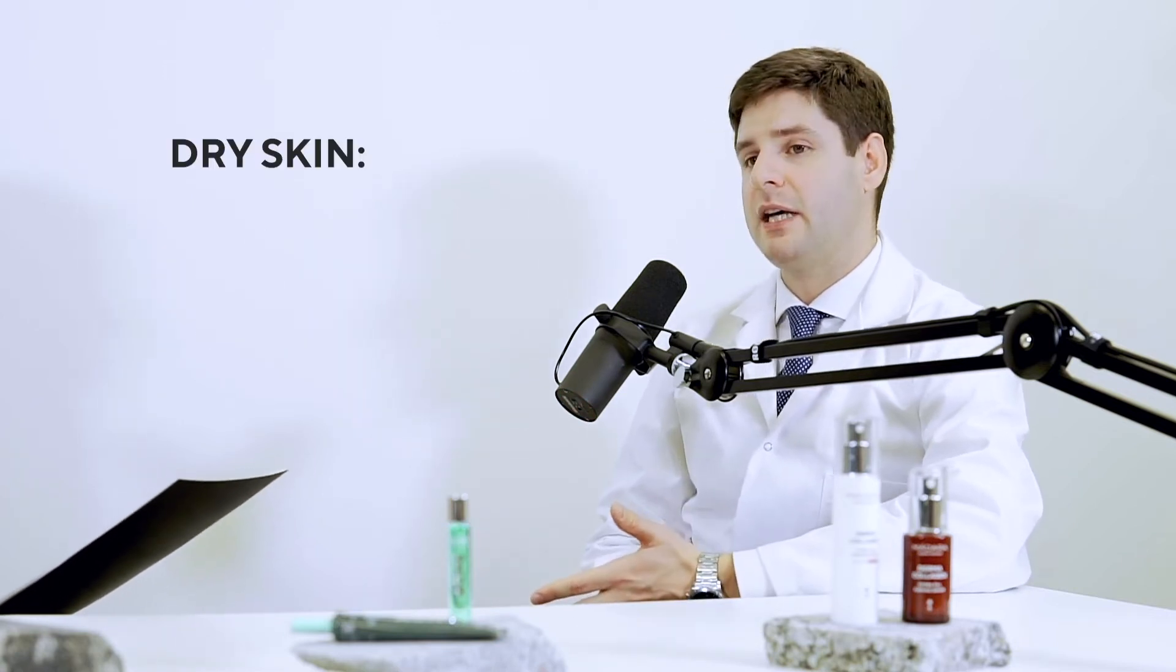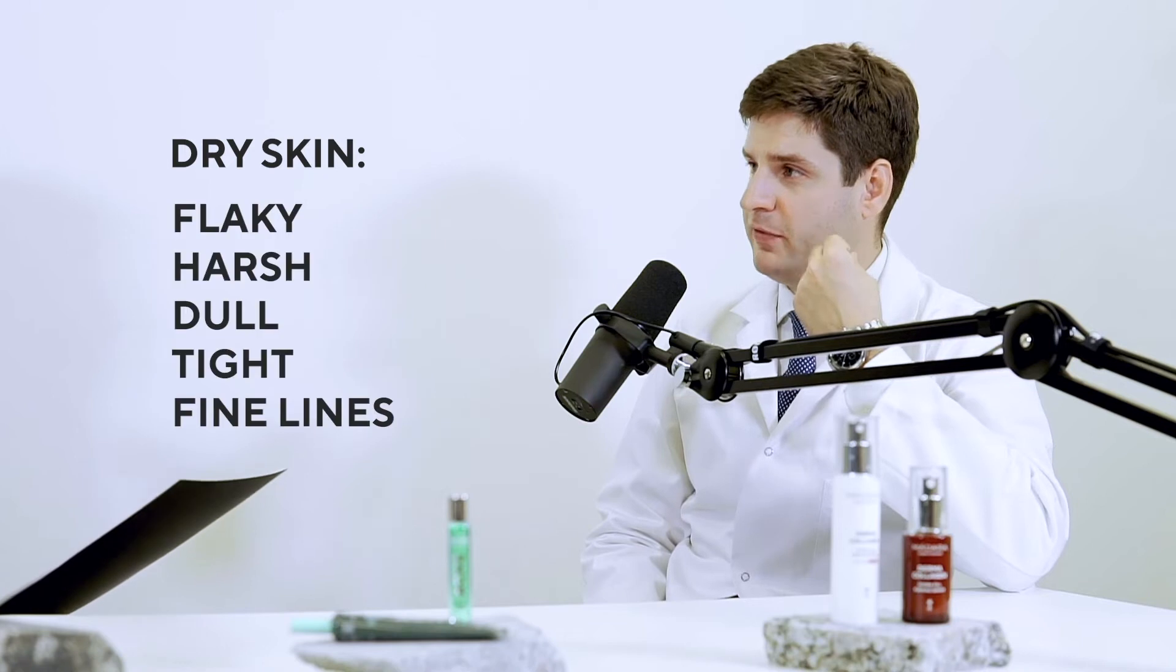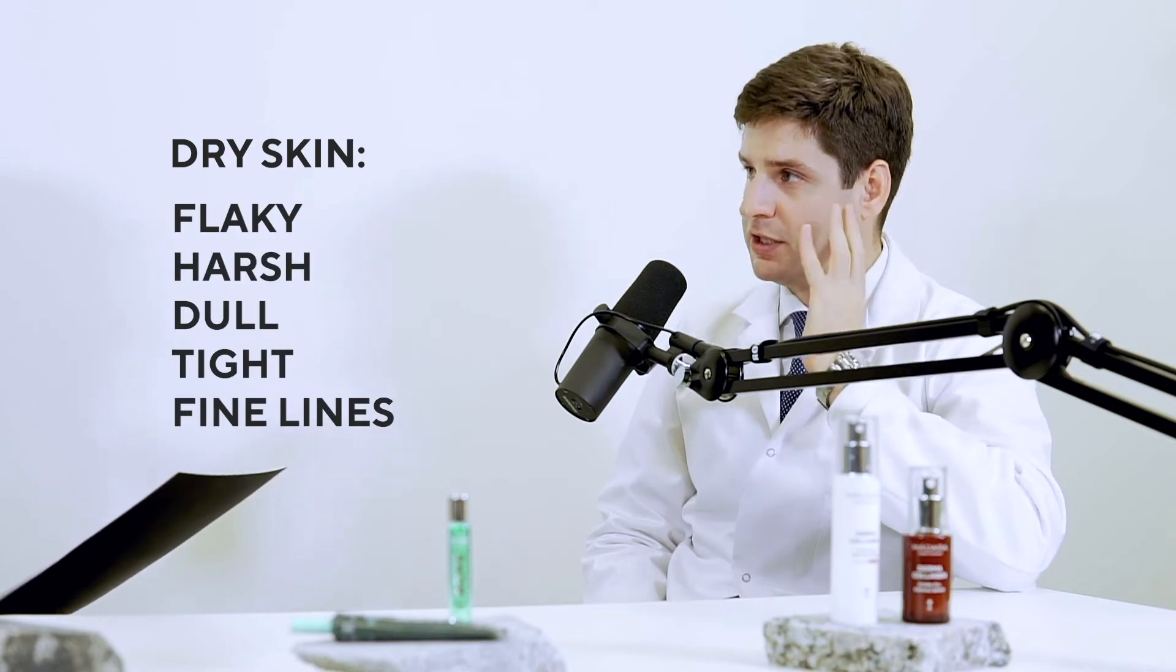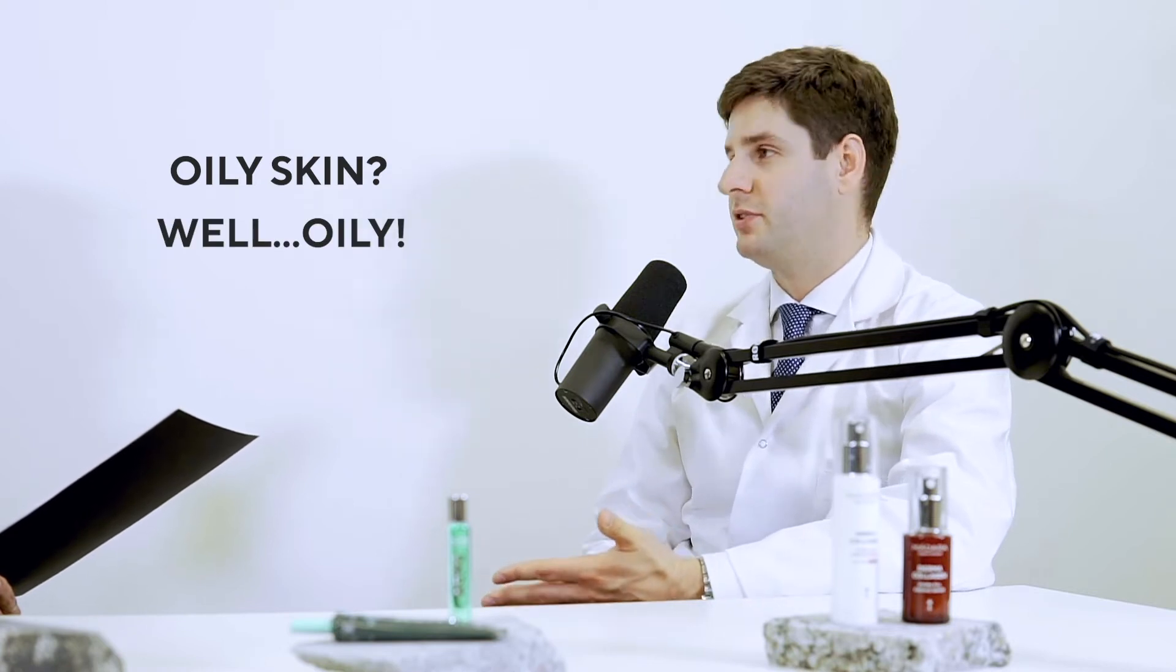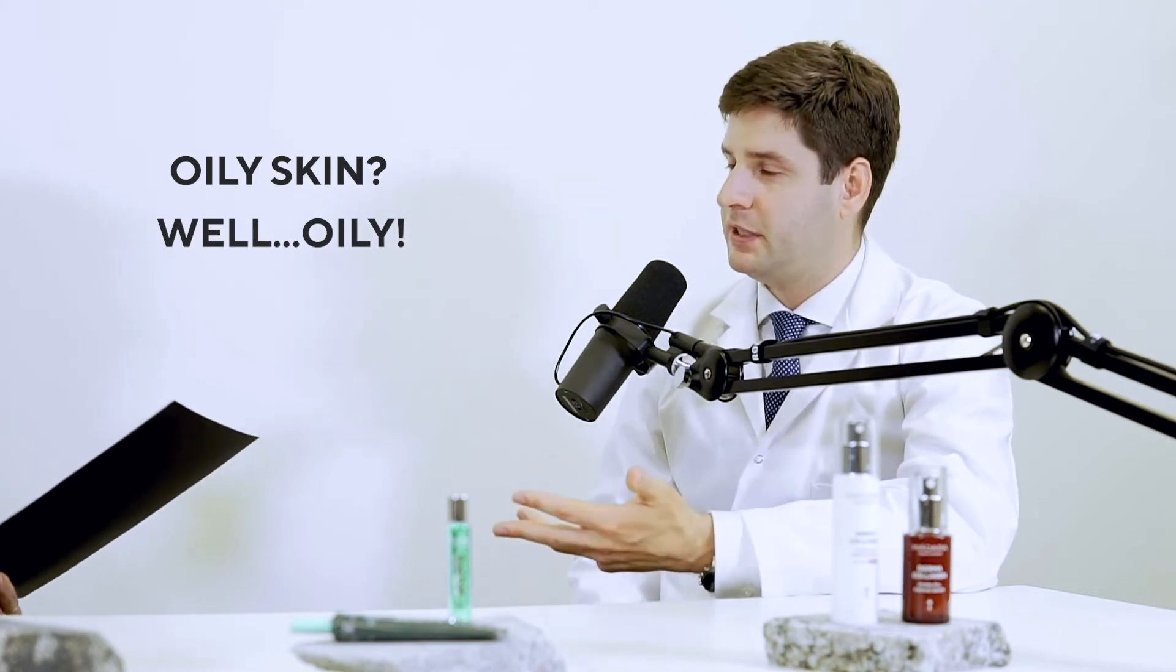Dry skin type is when you would see maybe some flakiness, maybe it would be harsh on touch. Oily skin type, well, I think it's easy to understand. It's oily, it's greasy. You could see whether it's oily or not.